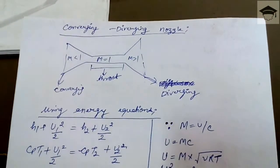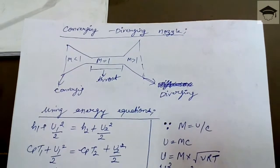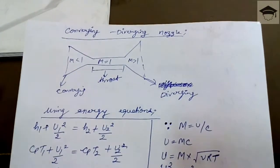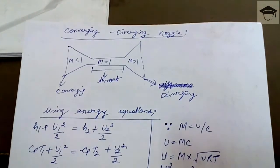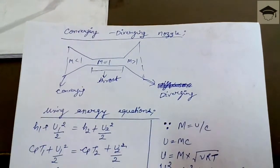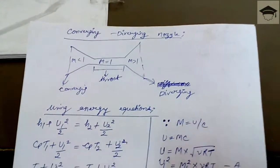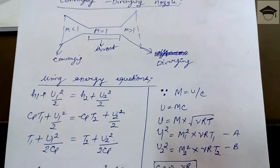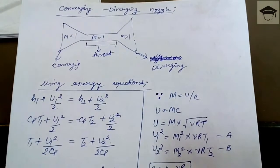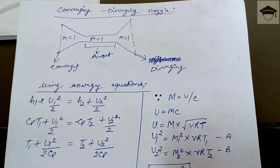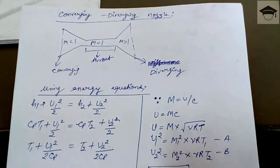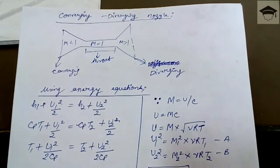Using the energy equation we can write: h1 + u1²/2 = h2 + u2²/2, where h1 is at the beginning of the converging section and h2 is at the end of the diverging section. So: cp·T1 + u1²/2 = cp·T2 + u2²/2.